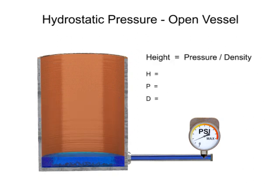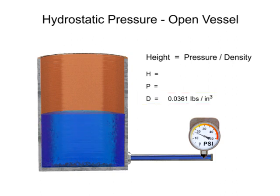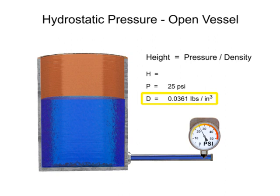To find pressure, a gauge is placed at the bottom of the vessel. With water having a density of 0.0361 pounds per cubic inch, the level of the fluid is calculated by dividing the head pressure by the density of the fluid.